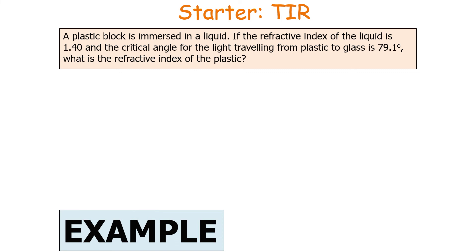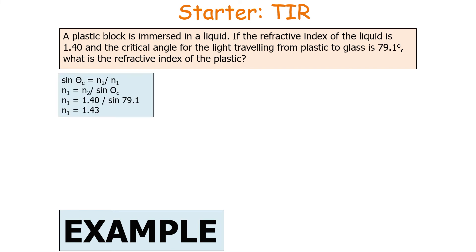The next question: a plastic block is immersed in a liquid. If the refractive index of the liquid is 1.40 and the critical angle for light traveling from plastic to liquid is 79.1 degrees, what is the refractive index of the plastic? Rearranging sine theta c equals n2 over n1 to find n1 gives n1 equals n2 over sine theta c. Substituting: 1.4 over sine 79.1 degrees gives n1 equal to 1.43, which makes sense because n1 must be greater than n2.